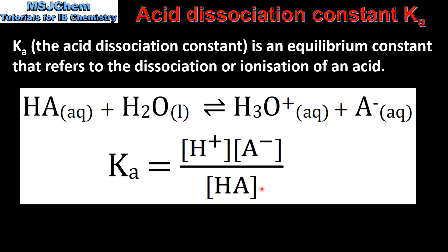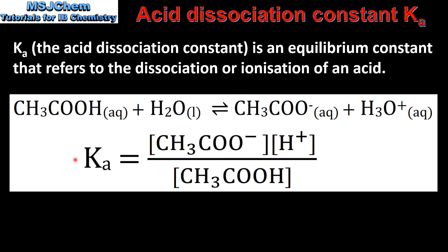As you can see, water does not appear in the expression. Here we have the expression for the acid dissociation constant for the above reaction. In the numerator we have the concentration of the ethanoate ion, which is the conjugate base of ethanoic acid, and the concentration of the hydronium ion. In the denominator we have the concentration of the ethanoic acid.